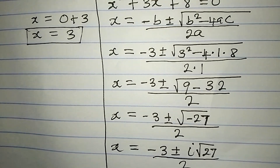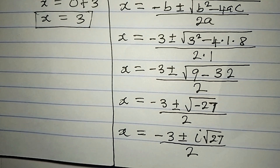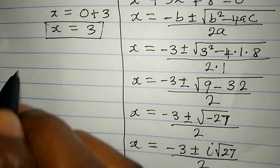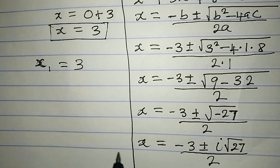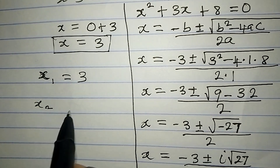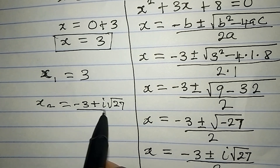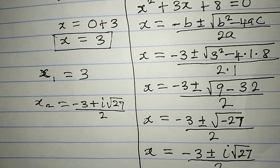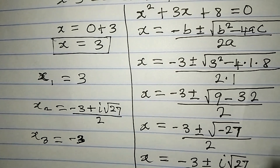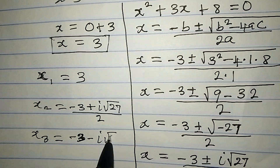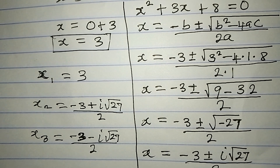This is a two-in-one solution. So the complete set of solutions is: x₁ equals 3, x₂ equals (minus 3 plus i root 27) over 2, and x₃ equals (minus 3 minus i root 27) over 2. These are the three solutions to the equation.